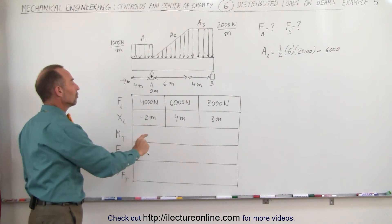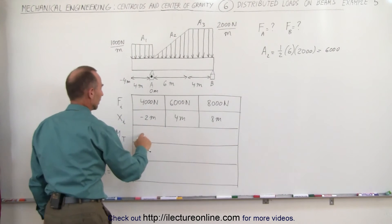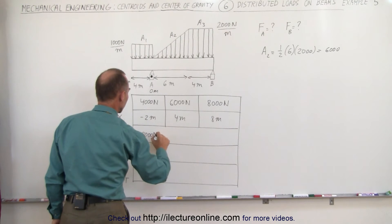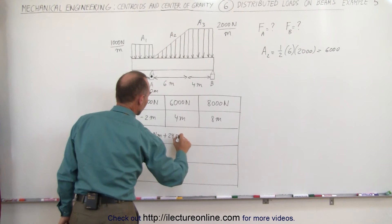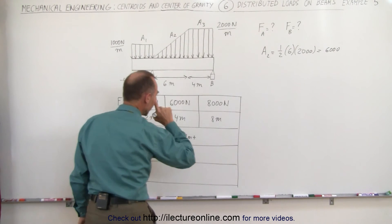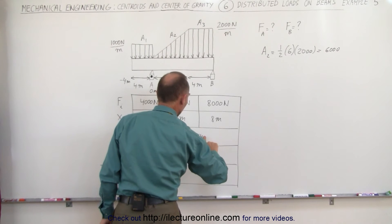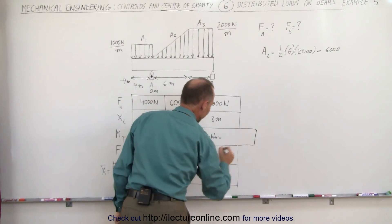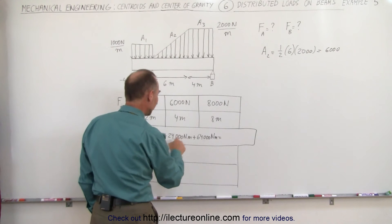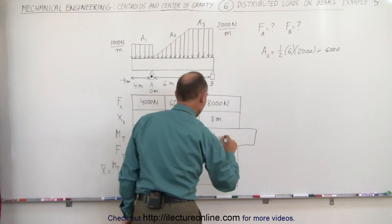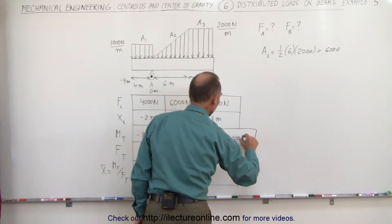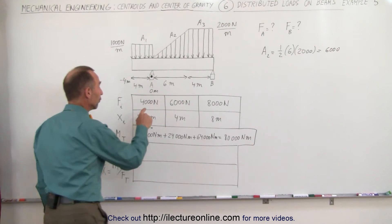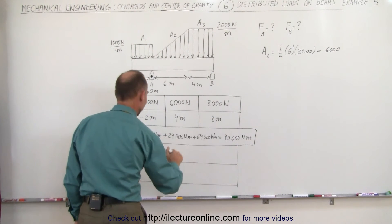Now we need to find the total moment by adding the products of force and centroid distance for all three segments. This equals minus 8,000 newton-meters plus 24,000 newton-meters plus 64,000 newton-meters, which equals 80,000 newton-meters. Then we add up all the forces: 4,000 plus 6,000 plus 8,000 equals 18,000 newtons.